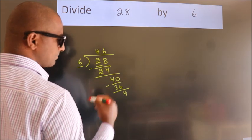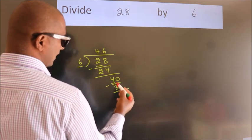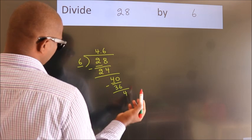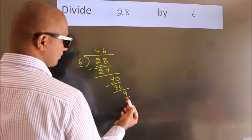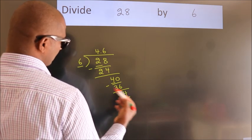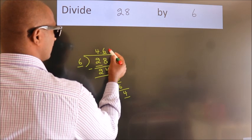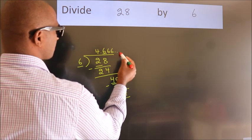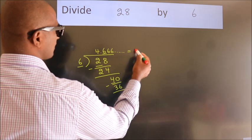Now you observe, we had 4 here and we got 4 again. That means this number keeps on repeating. So this is our quotient.